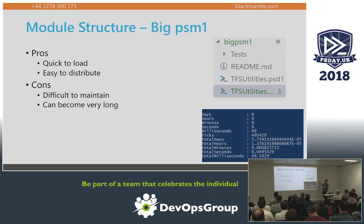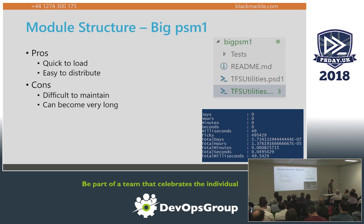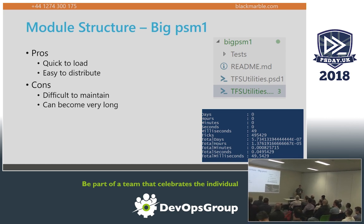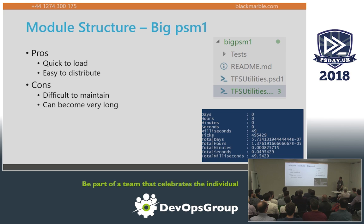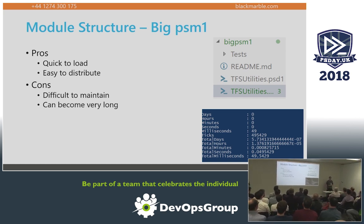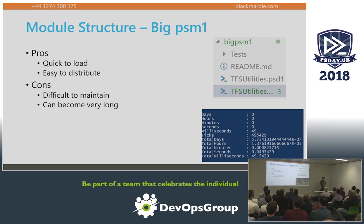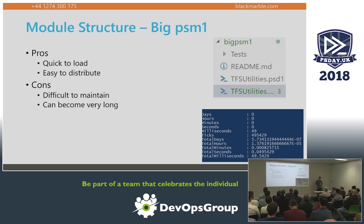Let's talk about actual module structure now. The classic approach is one giant PSM1 file — I'm sure we've all seen it and it's how we all start. We start with a PS1 script with a bunch of functions and just rename it to PSM1. It works, it's super quick, it loads in milliseconds. But it gets a little difficult to maintain, especially in source control. Have you ever tried merging a giant PSM1 file? PowerShell Get was 16,000 lines of code in a single PSM1 file — it is not pleasant.